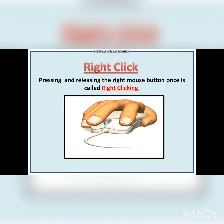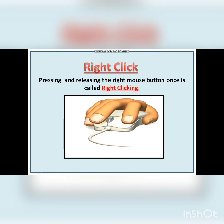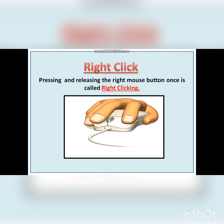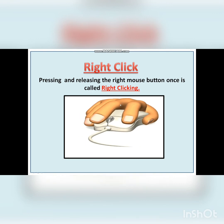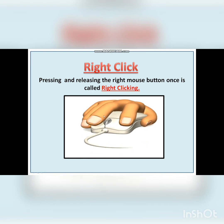Right click: Pressing and releasing the right mouse button once is called right clicking. In the GIF provided on the slide, it shows that the middle finger is placed on the right mouse button, and when we click it, it is called right clicking.